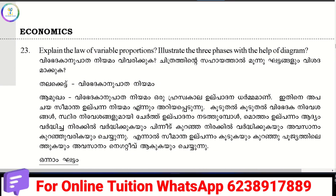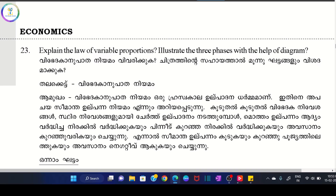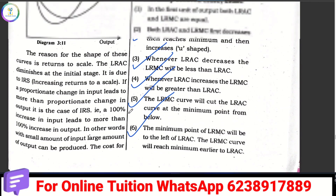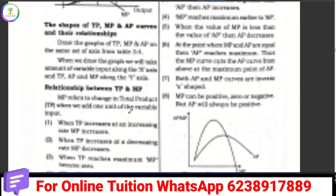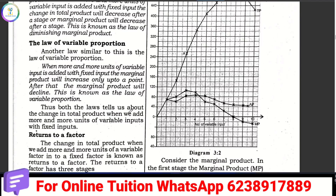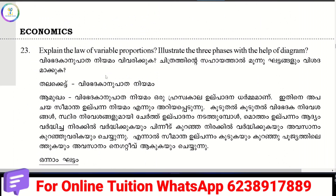The law of variable proportion has three phases. If you add a variable factor, the marginal product will increase only up to a point. After that, marginal product will decrease. This is the law of variable proportion.